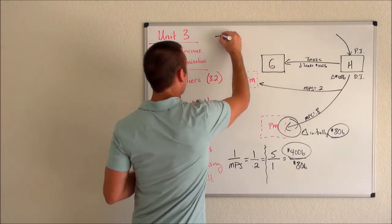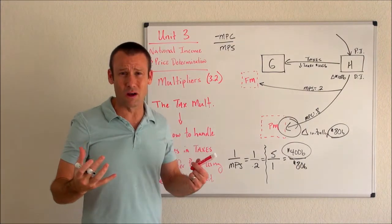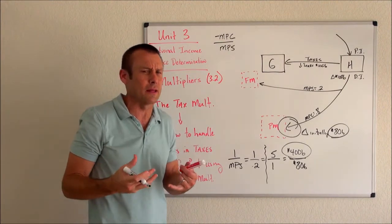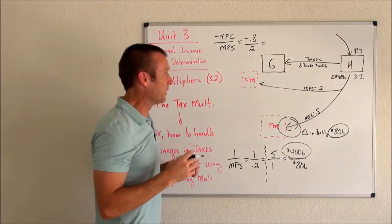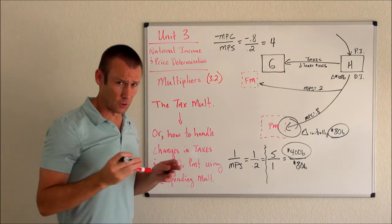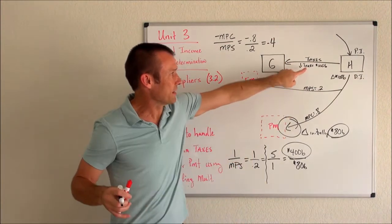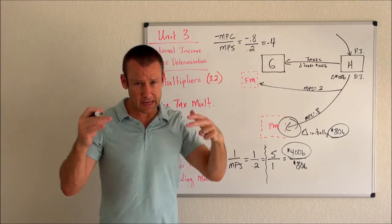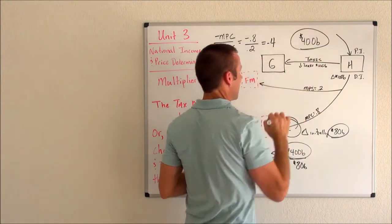Now I'll show you the tax multiplier. The formula — which I don't love because it's just another formula to memorize — is negative MPC over MPS. That equals negative 0.8 over 0.2, which equals negative 4. Taxes decreased by $100 billion, so that's negative $100 billion. Multiplying negative $100 billion by negative 4 gives a $400 billion impact on the economy — the same answer.